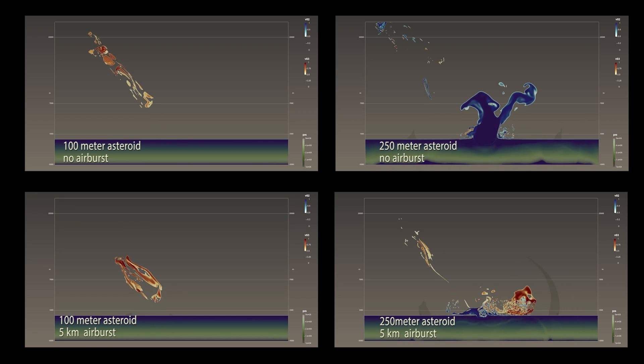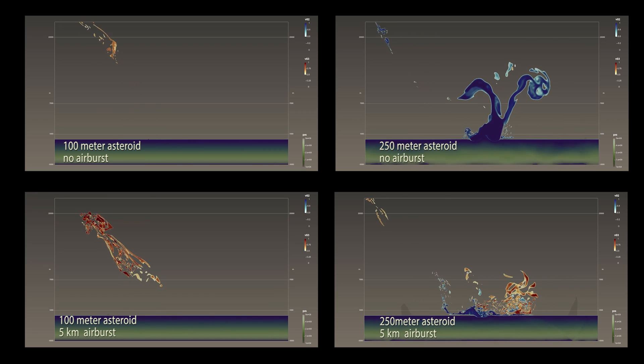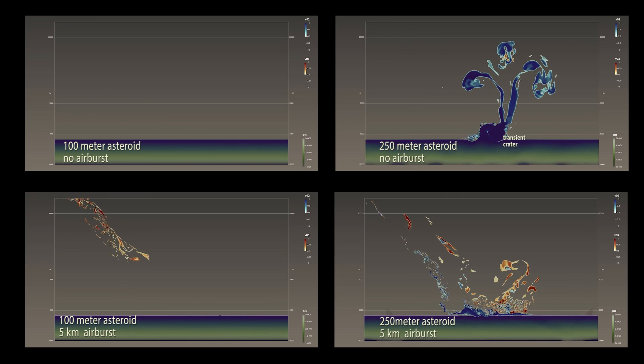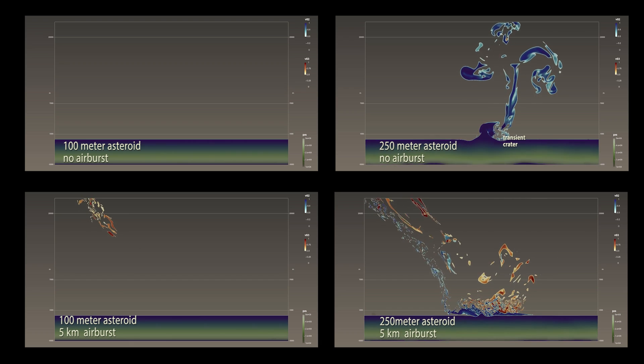Slicing through the dataset reveals more detail. The largest impact simulation shows development of a transient crater and a large plume of water and water vapor.